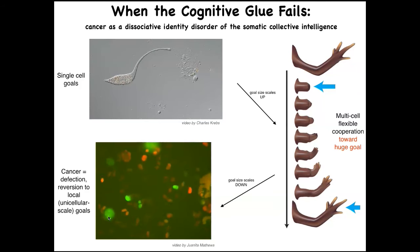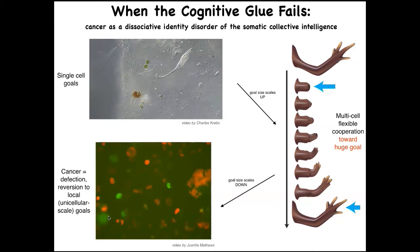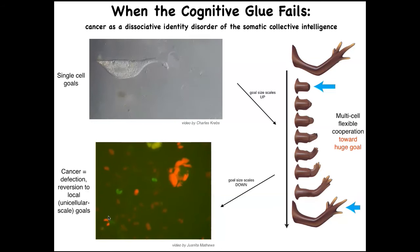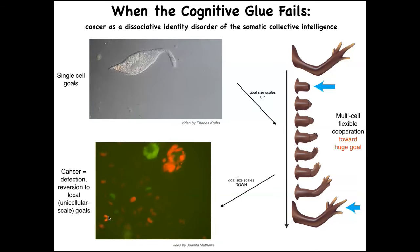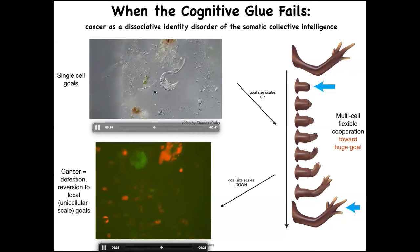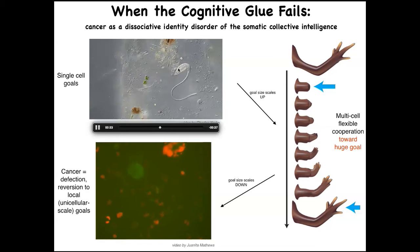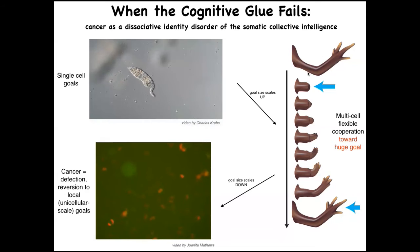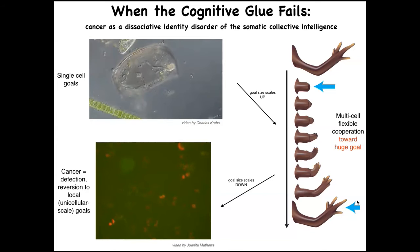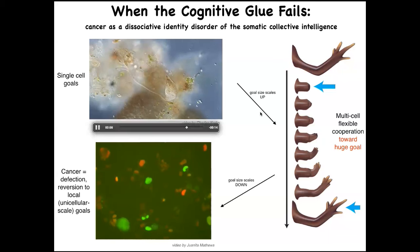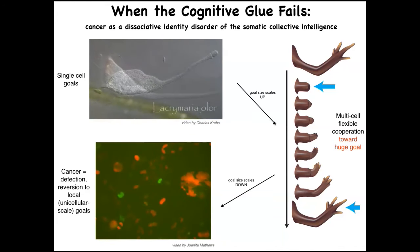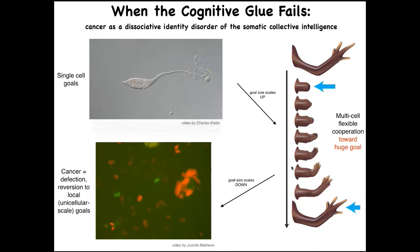What happens when this cognitive glue fails? These electrical networks provide essential connectivity allowing groups of cells to store memories and pursue error minimization with respect to goals in spaces that individual cells don't worry about. The tiny homeostatic goals of a single cell — metabolic and so on — are scaled up by electrical and chemical networks to maintain large-scale goals. I call this the cognitive light cone: the size of the set points toward which the system can competently work is greatly scaled up.